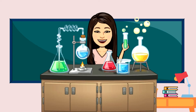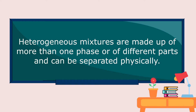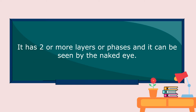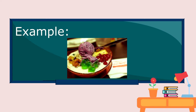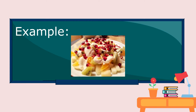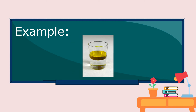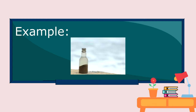How about a heterogeneous mixture? Heterogeneous mixtures are made up of more than one phase or of different parts and can be separated physically. It has two or more layers or phases and the differences can be seen by the naked eye. Examples are halo-halo, fruit salad, mixture of oil and water, and sand in water.